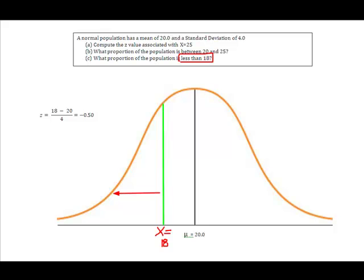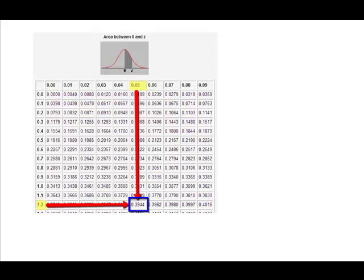The z-score of negative 0.50 gives us the area between z and the mean. So how do we figure out how much is here? Well, we go back to our normal distribution table, and we find 0.50. So there's the 0.5, and there's the 0.0. So we're simply going to come down in the chart, and we're going to find the area where 0.5 and 0 intersect. And we're going to come up with 0.1915.